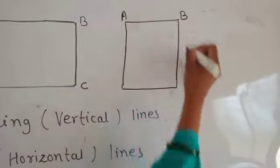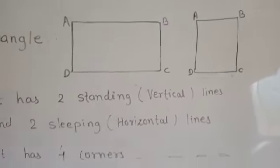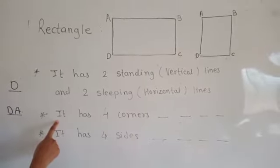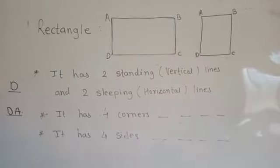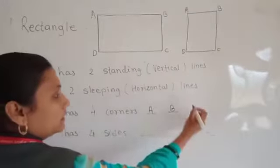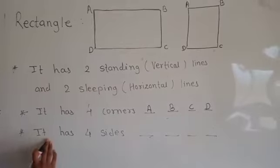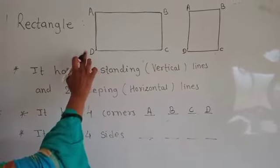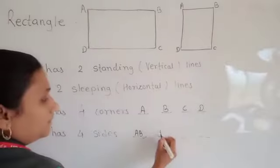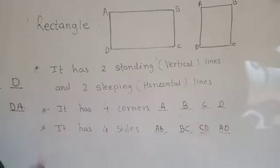A rectangle has four corners, just like a square. The corner names are: corner A, corner B, corner C, and corner D. These are the corners of our rectangle. A rectangle also has four sides: side AB, side BC, side CD, and side DA. These are the four sides of our rectangle.